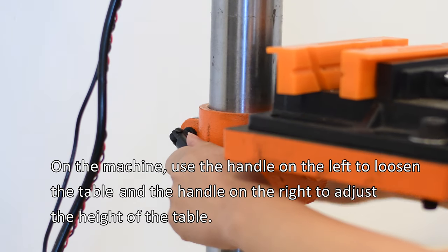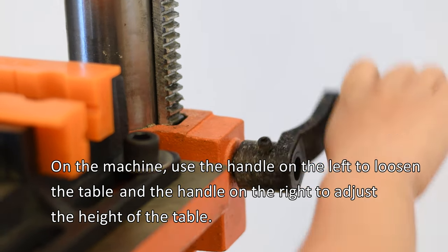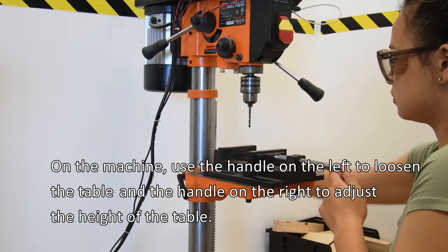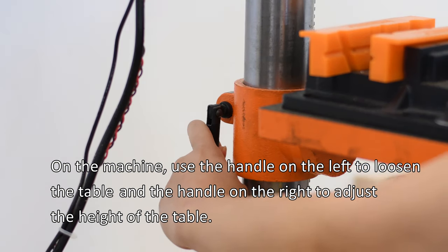On the machine, use the handle on the left to loosen the table and the handle on the right to adjust the height. Make sure to re-lock the table when done.